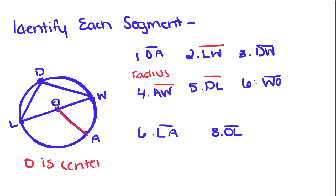LW is this segment right here. It's a chord because it joins two points of the circle together, but it contains our center, so therefore it's a special kind of chord called the diameter.